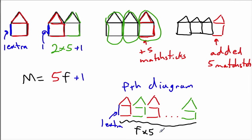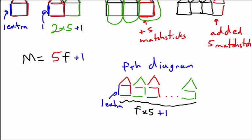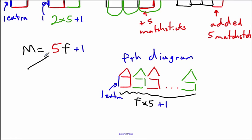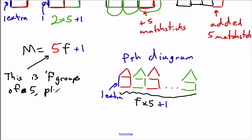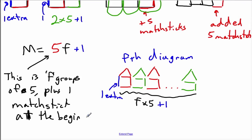So you can write this out in words: this is F groups of five, plus one matchstick at the beginning. That shows why your rule works and justifies why your rule is correct.